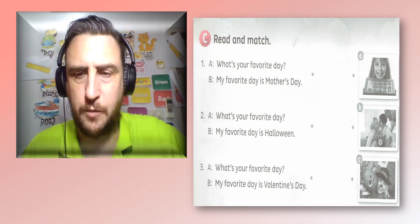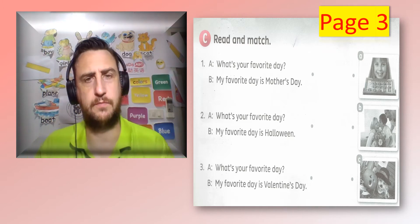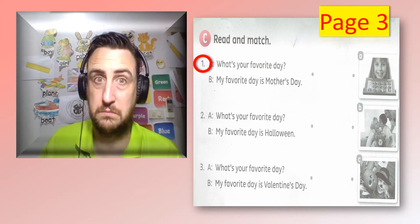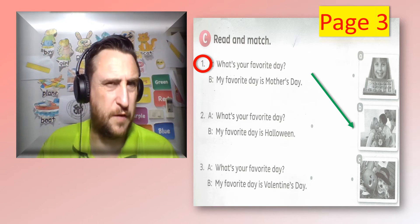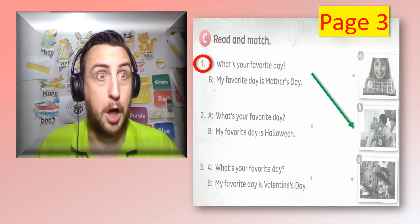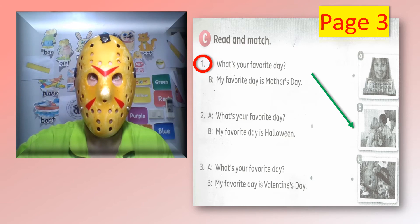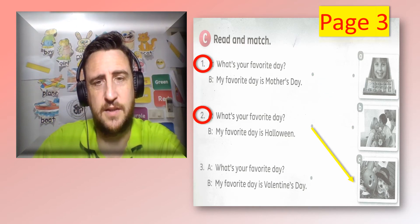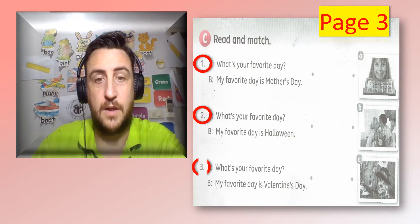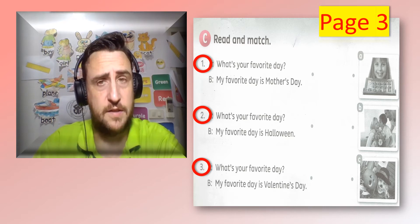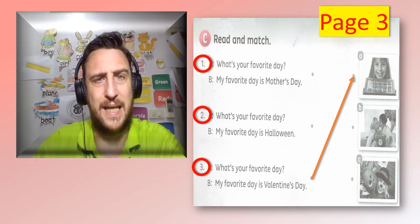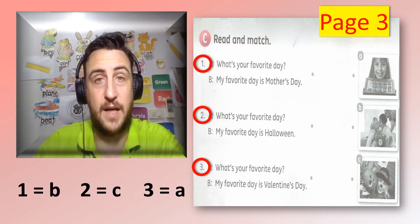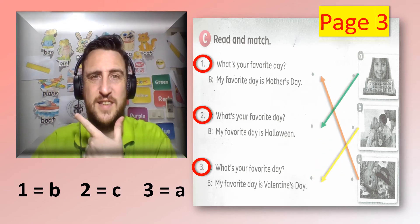Here is part C, page number three in your workbook — we are going to look at the answers. Number one: what is your favourite day? My favourite day is Mother's Day. Is Mother's Day A, B, or C? It is B. Number two: what is your favourite day? My favourite day is Halloween — that is C. Number three: what is your favourite day? My favourite day is Valentine's Day — so number three must be A. The answers are: number one is B, number two is C, and number three is A. Did you get them all?